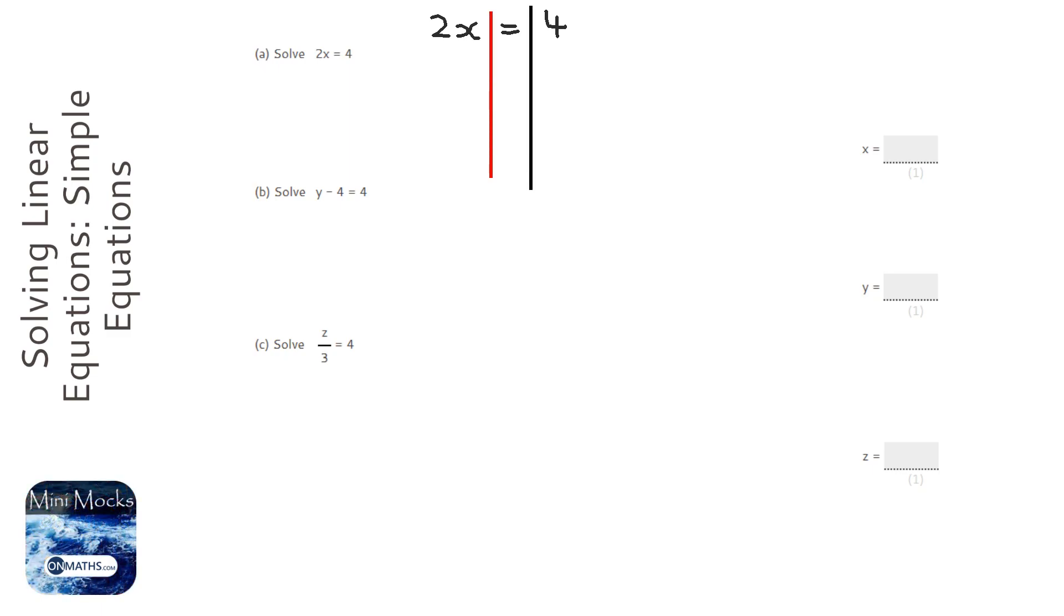Just draw two lines down. Now we need to get x alone, so the thing next to the x is times two. To get x alone, we need to do the opposite of times two, so we're going to divide by two on both sides.